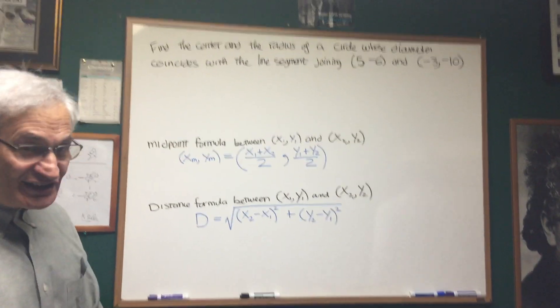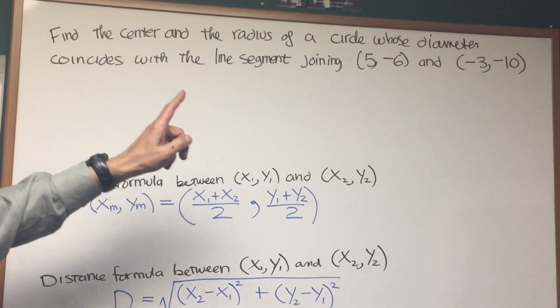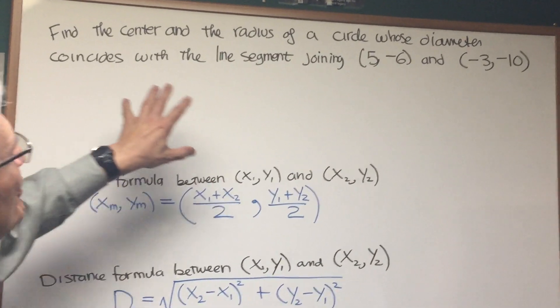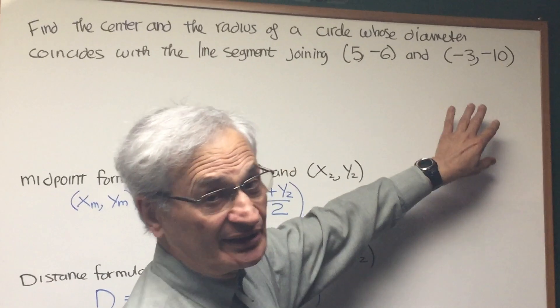All right, Professor, thank you very much. Yes, let's go look at this problem here. Find the center and the radius of a circle whose diameter coincides with the line segment joining (5, -6) and (-3, -10).